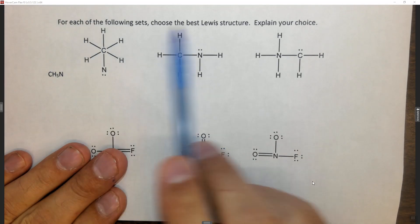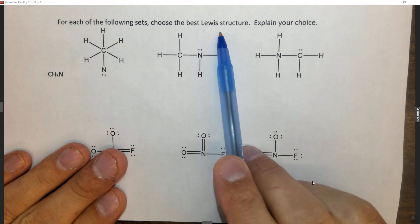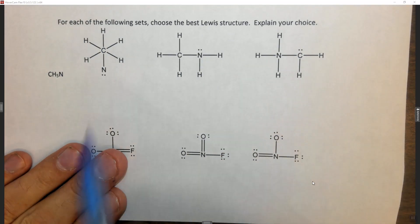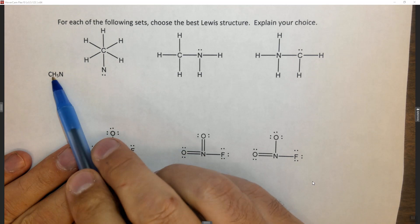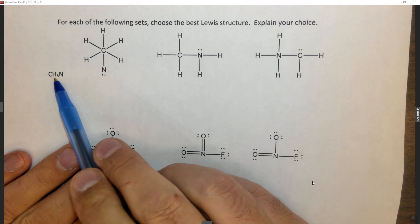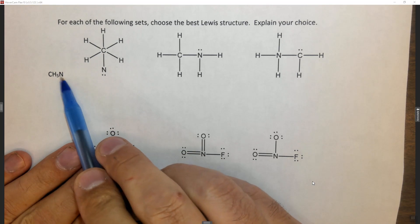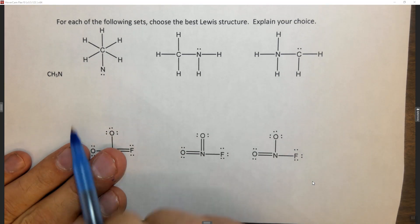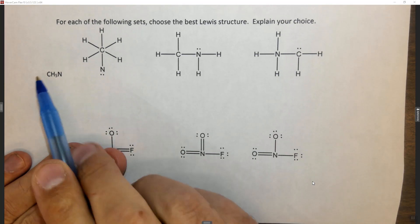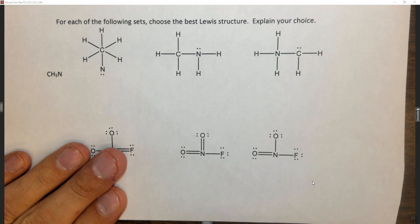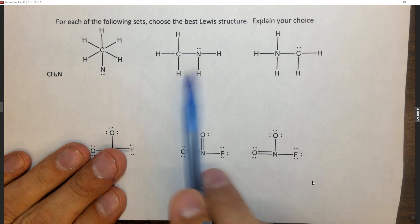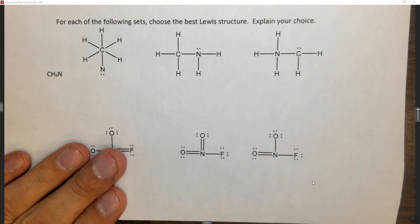The question says for each of the following sets, choose the best Lewis structure and explain your choice. So here we have CH5N. This molecule is made famous in the show Breaking Bad — this is the molecule methylamine. So we need to decide which one of these is the best Lewis structure.